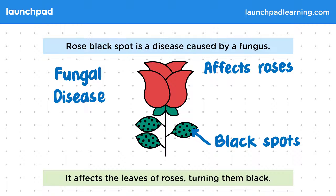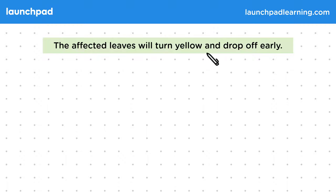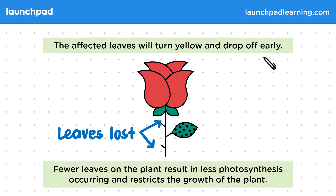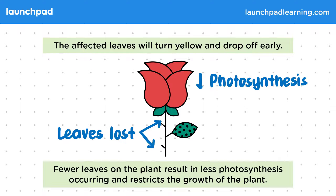What's the consequence of a rose plant being infected? The affected leaves will turn yellow and drop off early, meaning leaves are lost from the rose plant. Fewer leaves result in less photosynthesis occurring, which restricts the growth of the plant. For the exam, you need to know that rose black spot causes the leaves to turn yellow and drop off, reducing photosynthesis and hence growth.